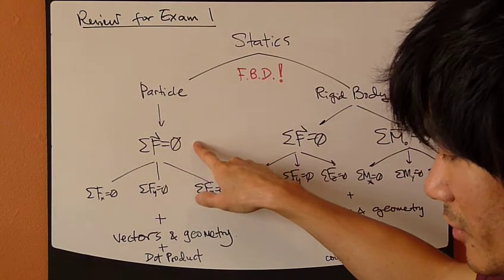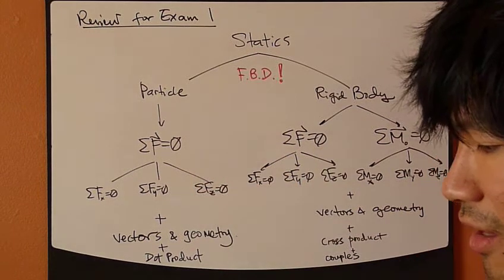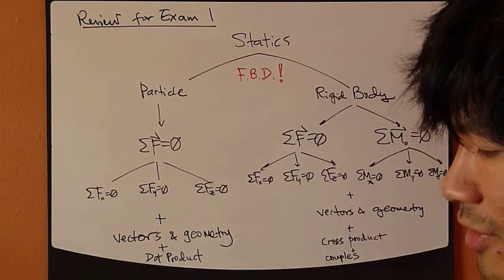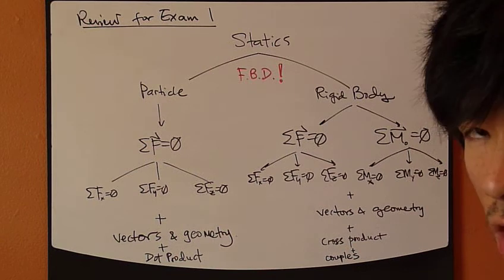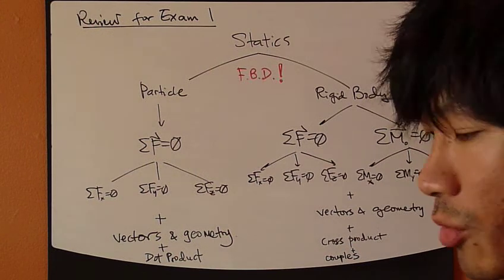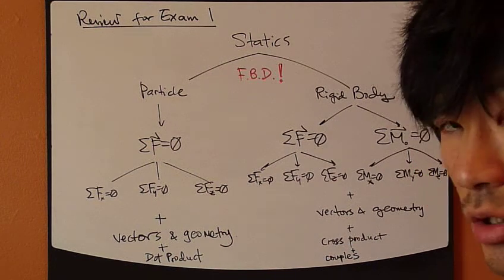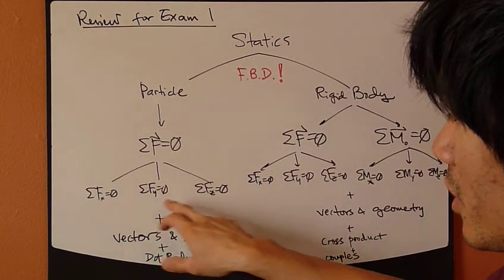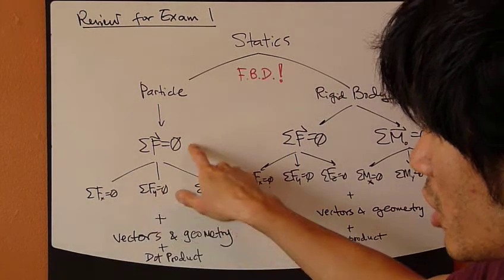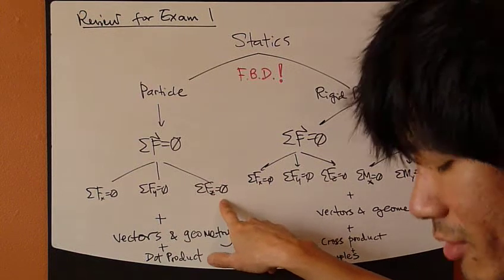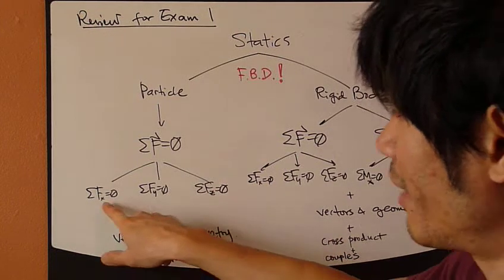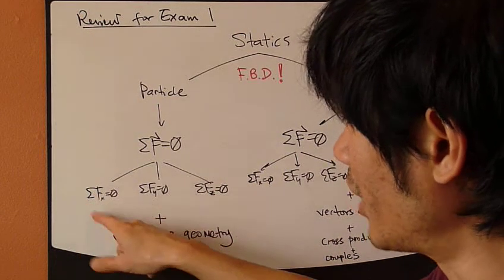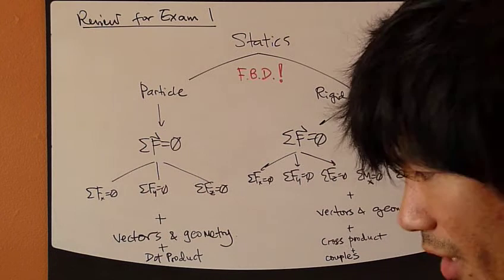So, you need to recognize whether the problem is two-dimensional or three-dimensional, and what coordinate system is most useful. So, if you choose Cartesian coordinate system, x, y, z, then you have these three components of this equation. So, each of these equations now is a scalar equation. So, now you can expand the left-hand side by looking at your free-body diagram.